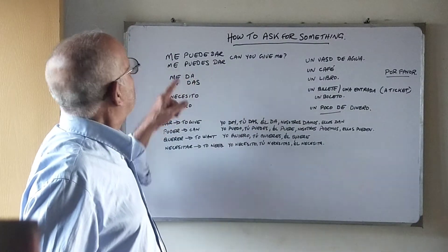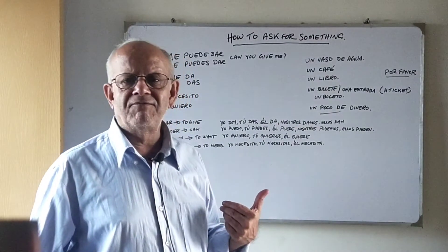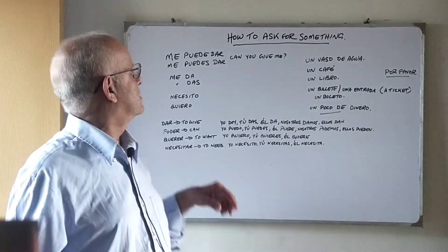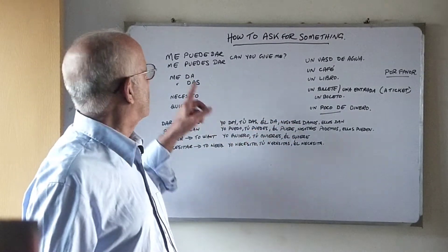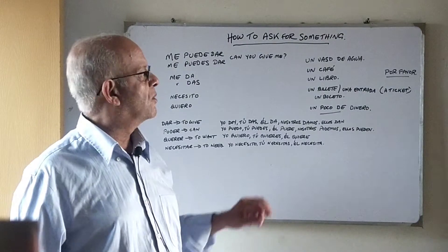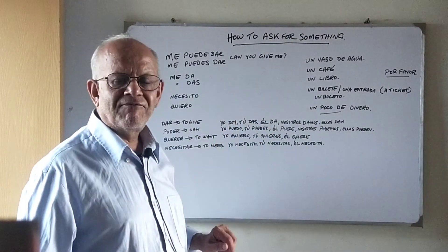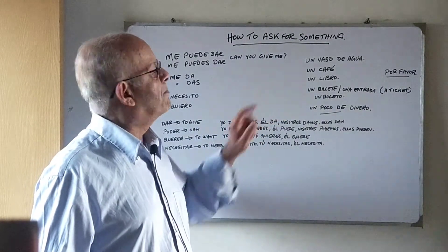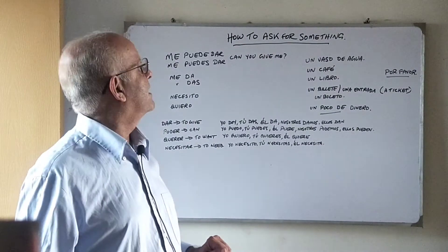Me puede dar or you can say me puedes dar if you are talking in the tu formation. And then you add whatever you are asking for. Me puedes dar un vaso de agua, can you give me a glass of water. Me puedes dar un café, can you give me a coffee. Me puedes dar un libro, can you give me a book.